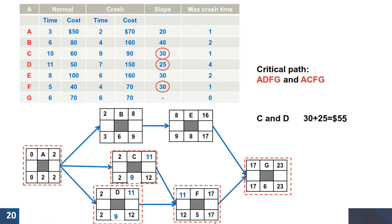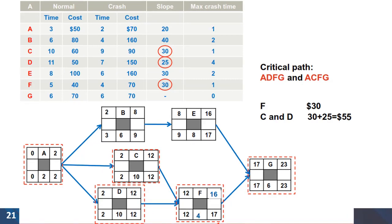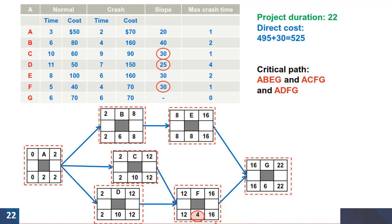Following the steps again, the choices that we have are shown on this slide. As you can see the two parallel critical paths are ACFG and ADFG. We can select activities C and D on each of the paths and the slope for this choice will be $55. Or we can be smarter and select activity F which is a merging point for the two critical paths. And the associated cost is only $30. So this is our choice.